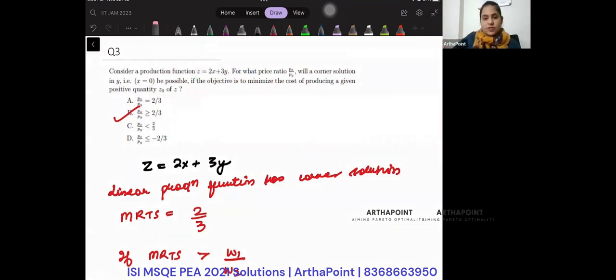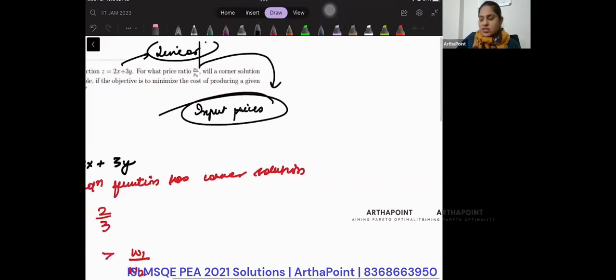This is a production function, and it's given to you that this is a linear production function. For what price ratio will you have a corner solution? These are the input prices. It is very simple.